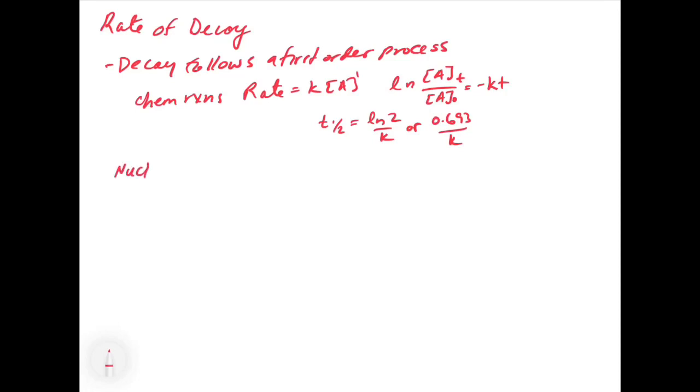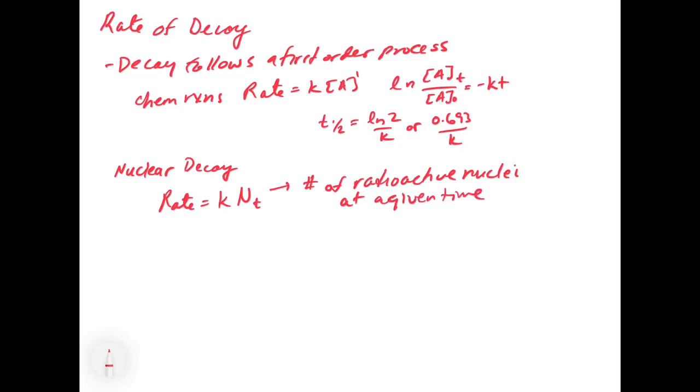Now for nuclear reactions, we have the same exact equations, except we have to understand there's a slight difference. The rate is still going to equal K, but instead of it being a concentration, it's the number of atoms at a given time. So N over T is the number of radioactive nuclei at a given time. You can think of that as the concentration, but instead of it being a concentration, it's the number.